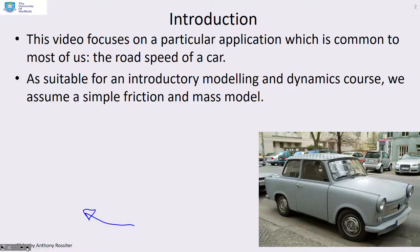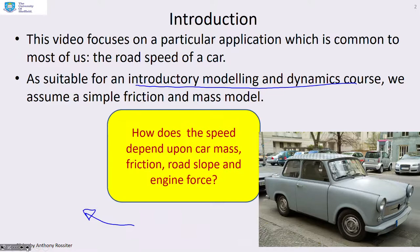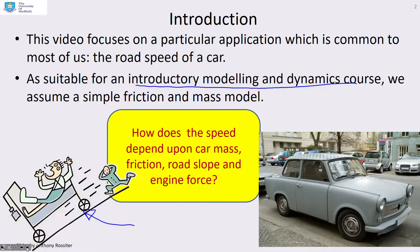Introduction. We're going to focus on a particular application which is common to most of us: the road speed of a car. We're focusing on what might be called an introductory modelling and dynamics course, so we're going to assume a simple friction and mass model. We want to ask how does this speed depend upon car mass, friction, road slope and engine force? And you'll notice here from this cartoon, road slope can be a big factor on the speed.